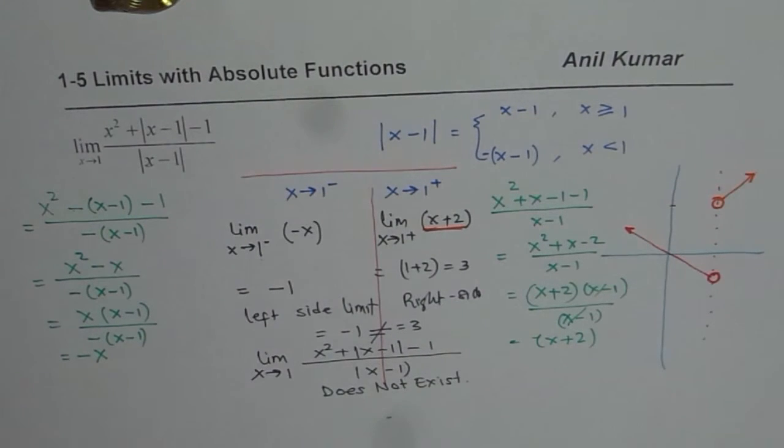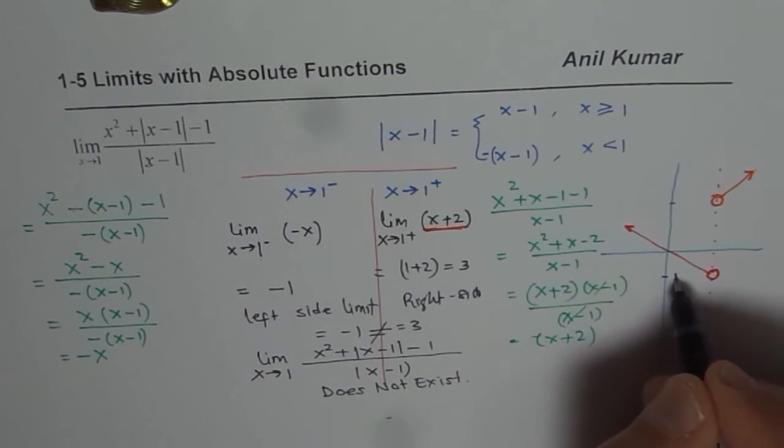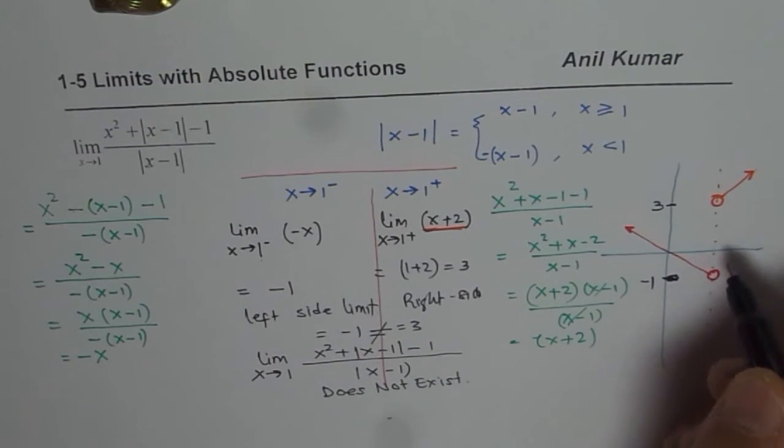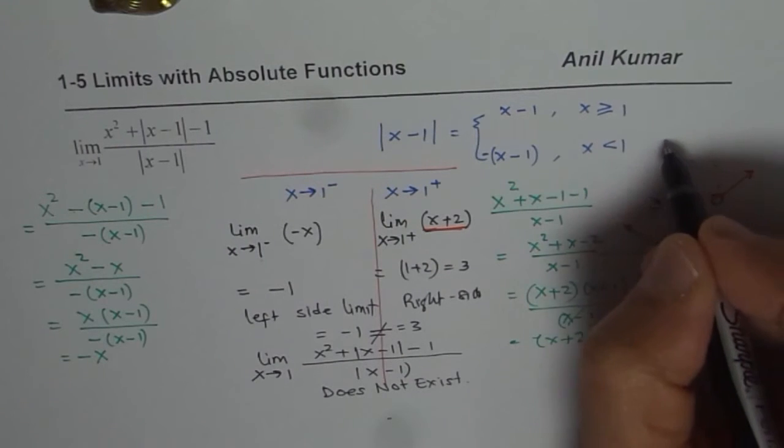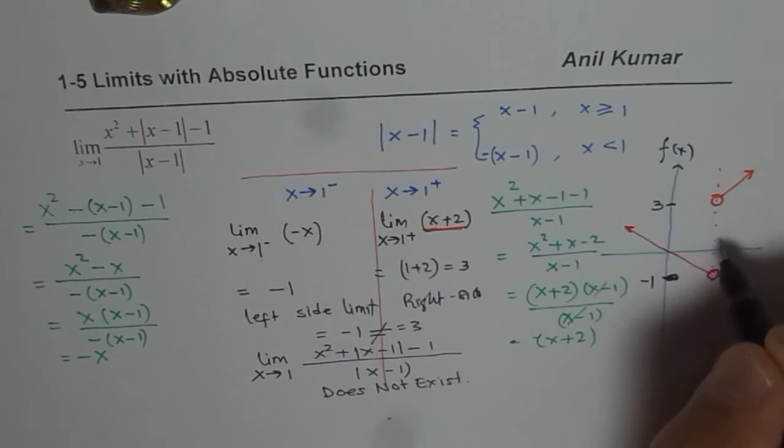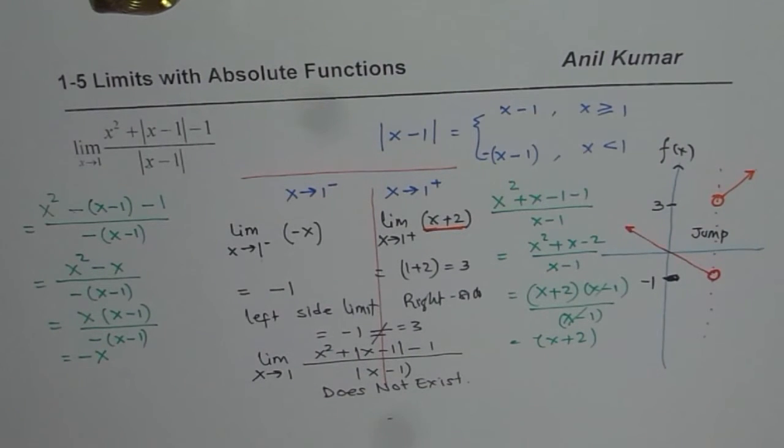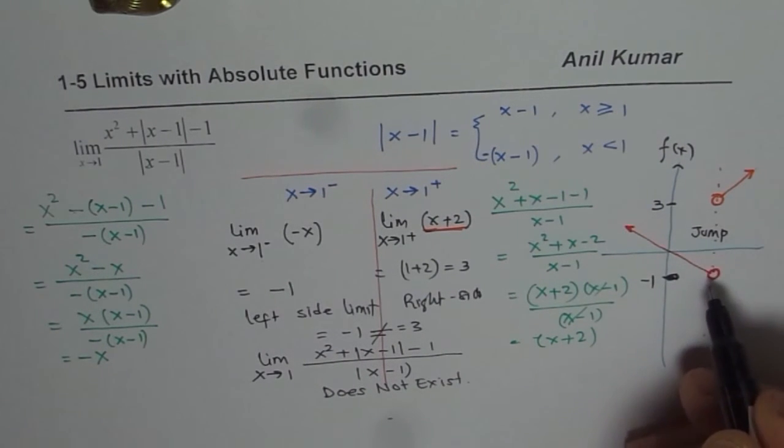So that is the graph of this particular function, where this point is minus 1. Minus 1. Let me rewrite. This is confusion, minus 1 on this side, and this is 3 for us, 3 on this side. That makes more sense. So that is the function which we are dealing with. And clearly, this is the jump discontinuity which you are looking into. So that is how the function is.